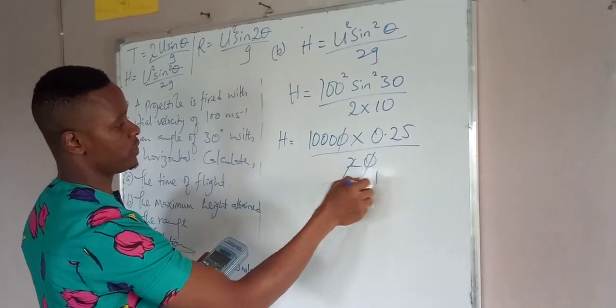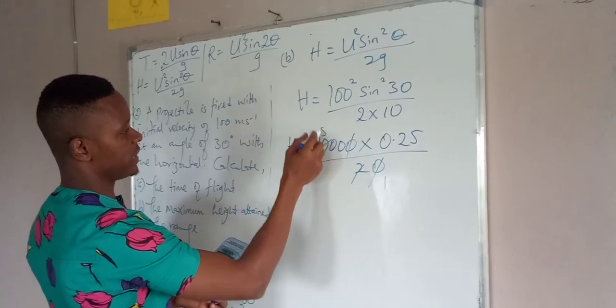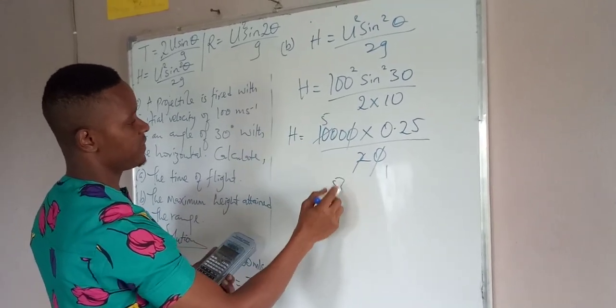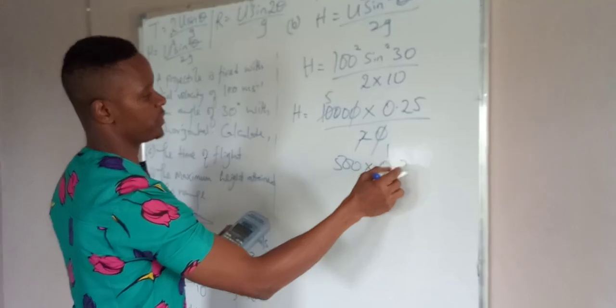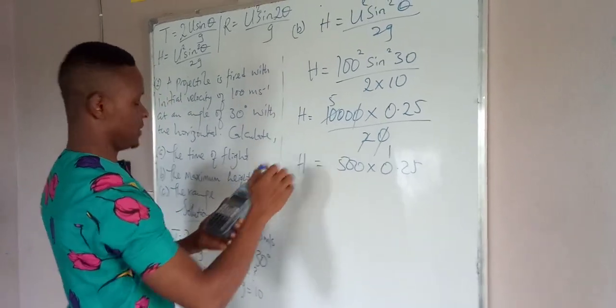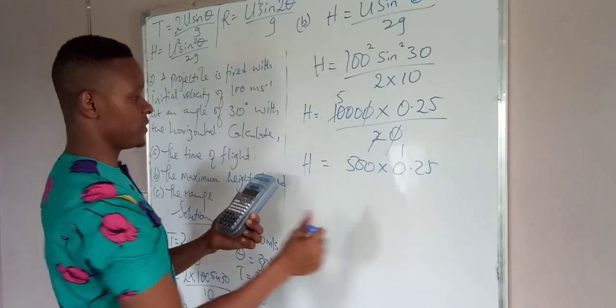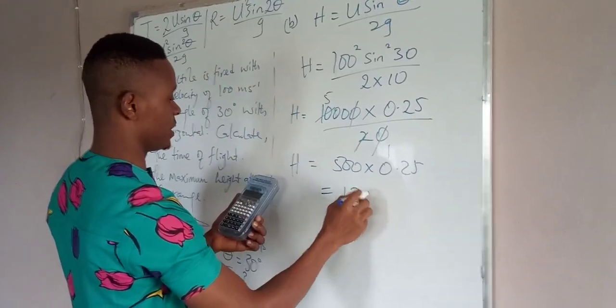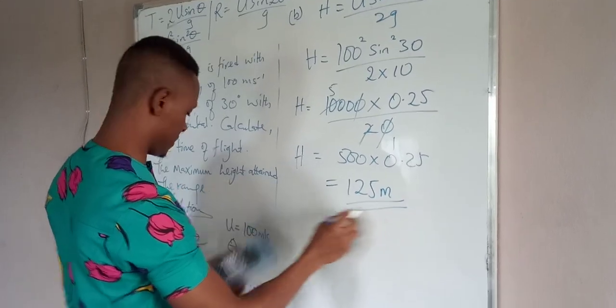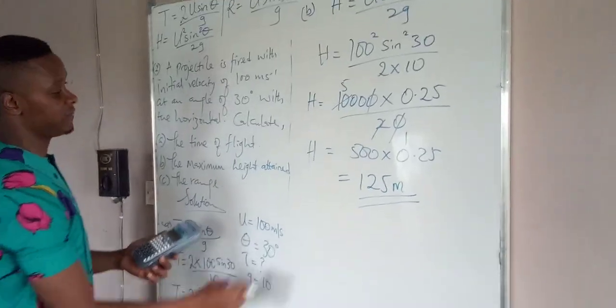0 will cancel out 0, 2 here and 1. 2 in 10 is 5. So we have 500 times 0.25. 500 times 0.25 will give us 125 meters.